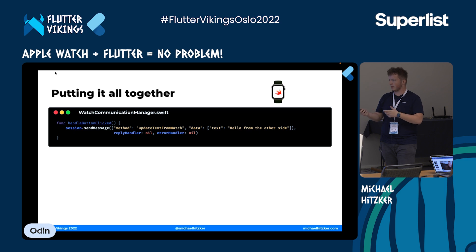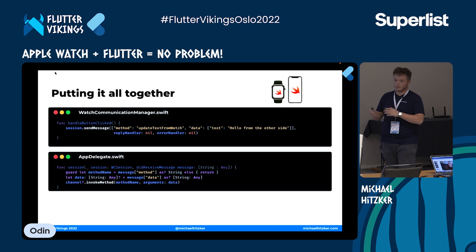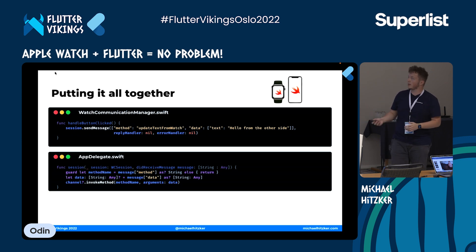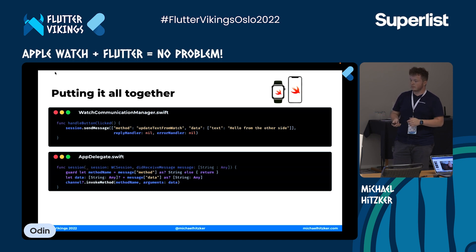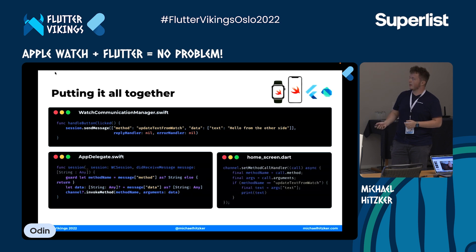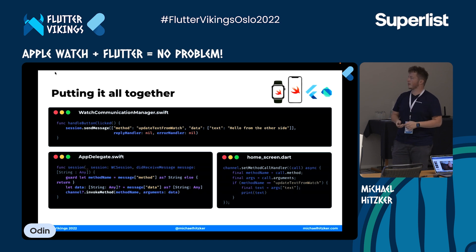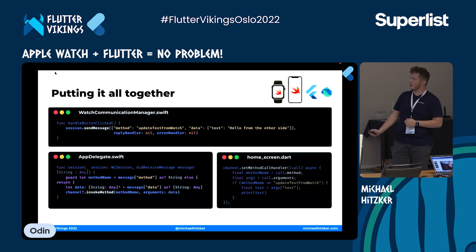The method name here corresponds to the platform channel method we pass from the watch. In the AppDelegate we don't touch the data or method — we just forward it to the Flutter app via the method channel. In the Flutter app the method call handler callback checks for the 'updateTextFromWatch' method name and prints the result. Pretty straightforward — no big magic going on.